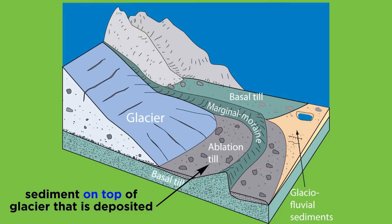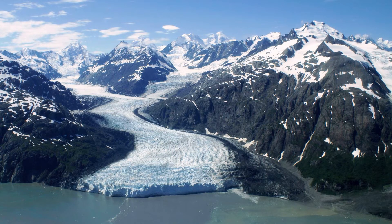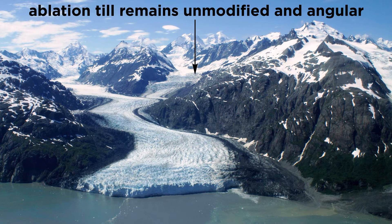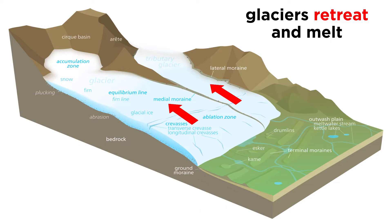But what about ablation till? How can sediment be on top of a glacier? This occurs when a glacier is flowing through a valley where the top of the ice is lower than the valley walls. In such a case, sediment can fall on top of the glacier during collapses of the valley walls. Since this sediment simply falls on top of the ice and remains there until the ice melts, it is not really modified by its environment, and it is therefore very angular. Most glacial till is deposited once it starts to retreat and melt.